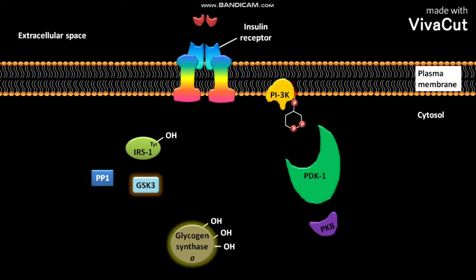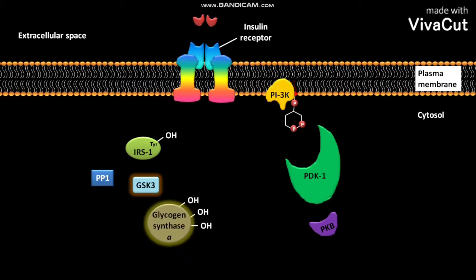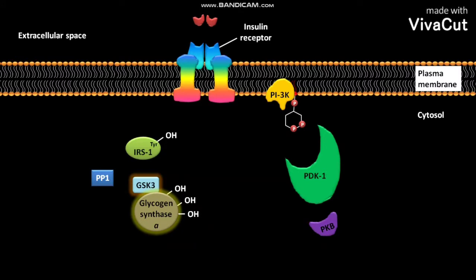In the cytosol of a cell, the active glycogen synthase A binds to the active enzyme GSK3 and gets phosphorylated to form inactive phosphorylated glycogen synthase B.